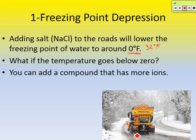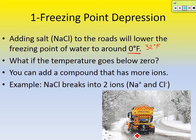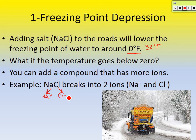You could add a compound that has even more ions. For example, sodium chloride dissolves into two ions — sodium and chloride. But we could use other ionic compounds that break up into even more ions, which would lower the freezing point even further.